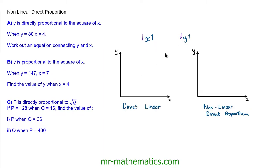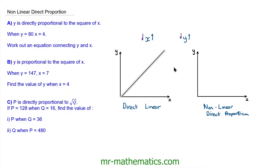We can look at this using sketched graphs. If we had a direct linear proportion, x and y would follow a straight line. The gradient of a line could change, but it would be a straight line. But if we had a non-linear direct proportion, it would still increase together, but this would now be along a curve. In this lesson we're going to look at what happens for non-linear direct proportion and how we model this algebraically.